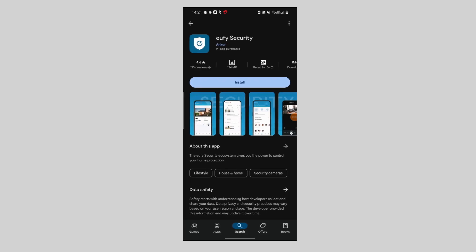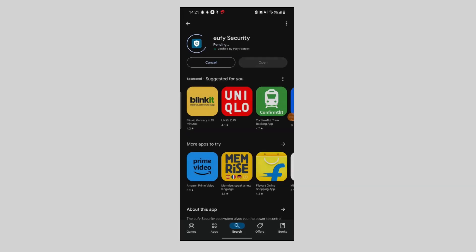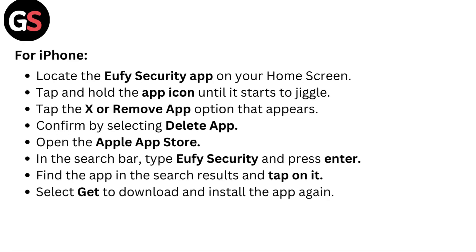Find the app in the search results and tap on it. Select Install to download and install the app again. For iPhone, locate the Yuffie security app on your home screen. Tap and hold the app icon until it starts to jiggle, then tap the X or Remove App option that appears. Confirm by selecting Delete App. Open the Apple App Store, type Yuffie security in the search bar, find the app, and select Get to download and install it again.